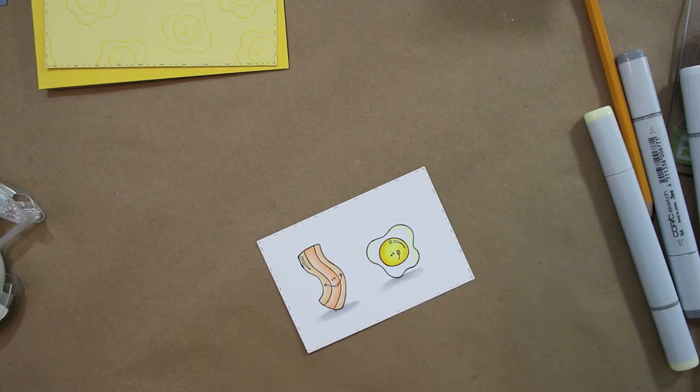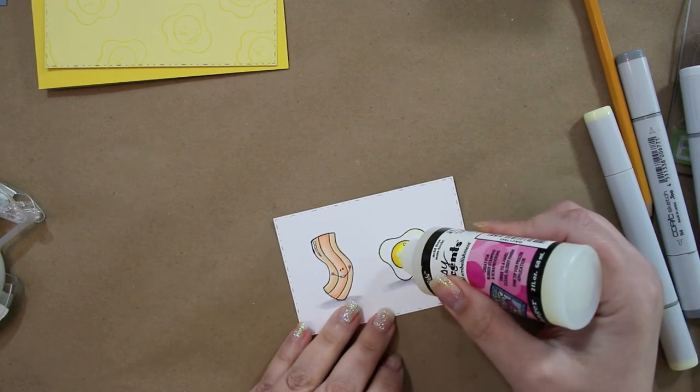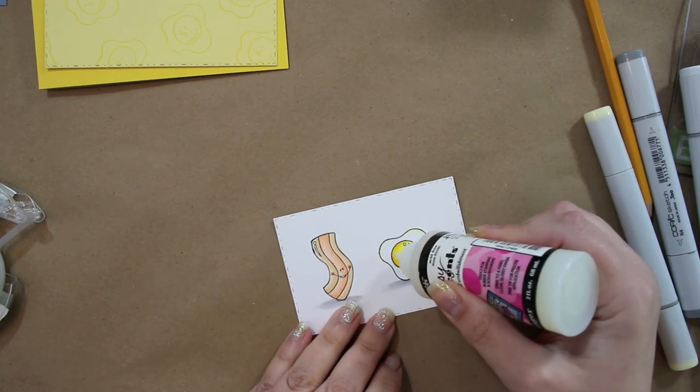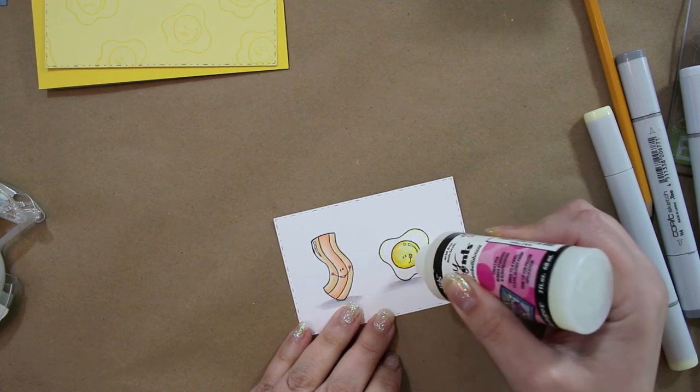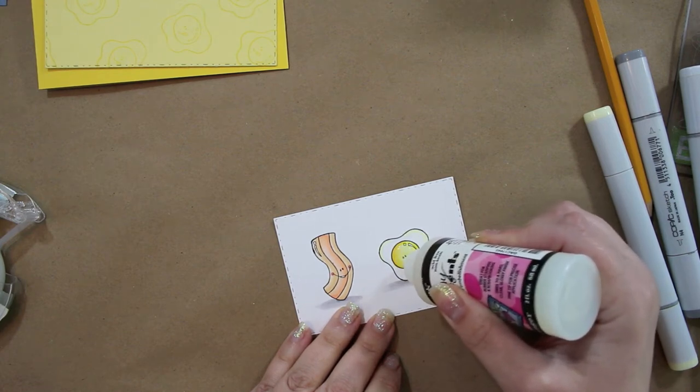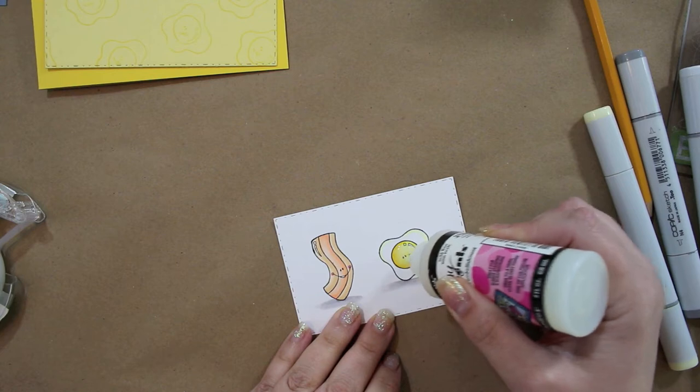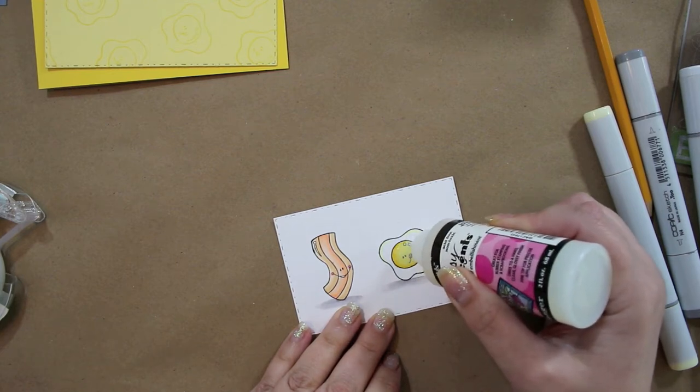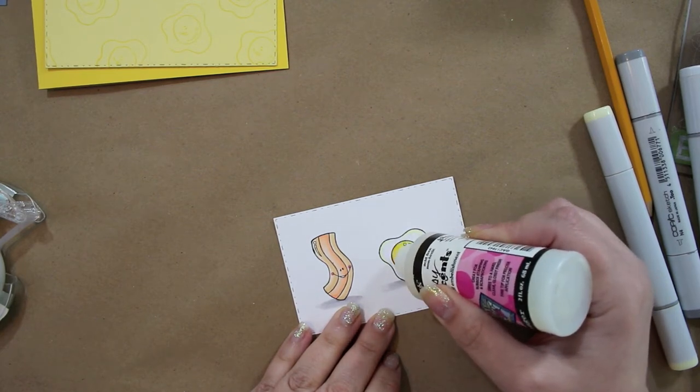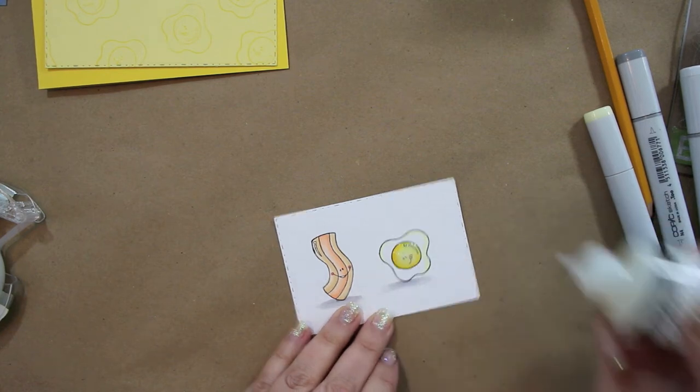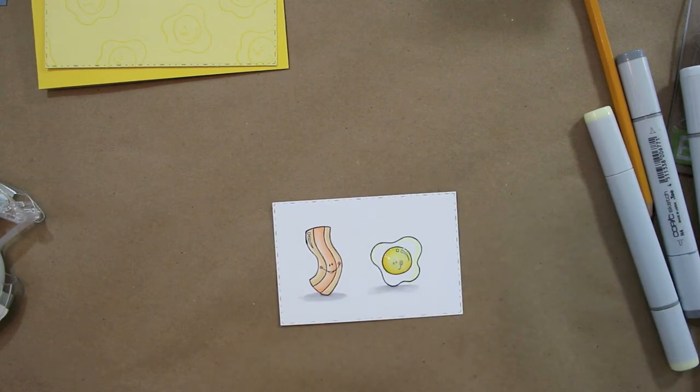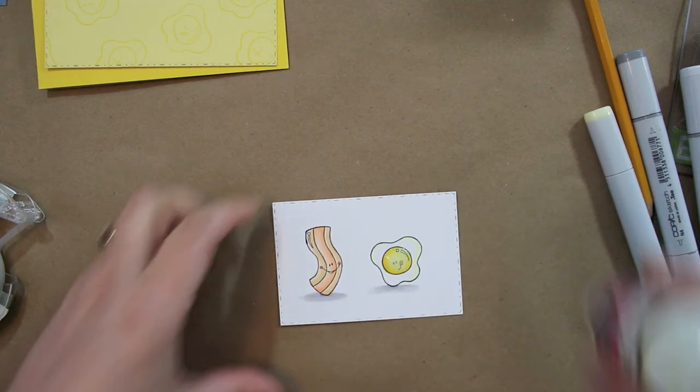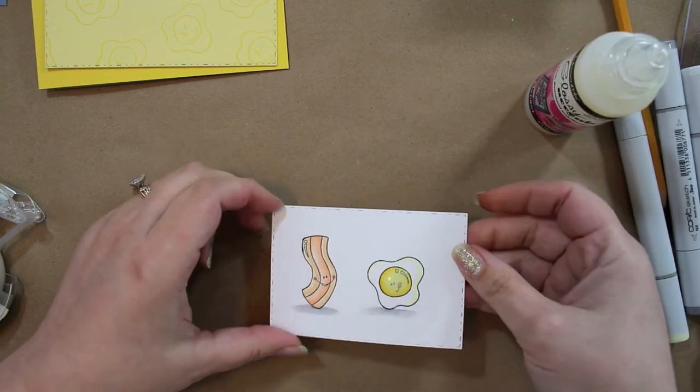To make the yolk part of the egg really look like yolk, I used glossy accents and went all around the image. When you first use the glossy accents they look kind of cream color, not see-through clear, but as you give it time it does become more clear.